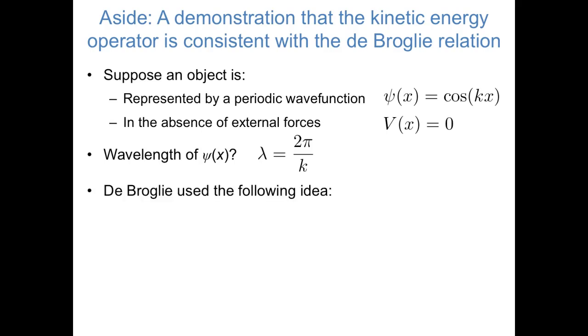De Broglie will use the following idea, that the momentum of a wave is equal to Planck's constant h over the wavelength, lambda. So combining these two ideas, the momentum of our wave function, psi of x, is equal to hk over 2 pi. Or the way we've defined h bar, it's equal to h bar times k.